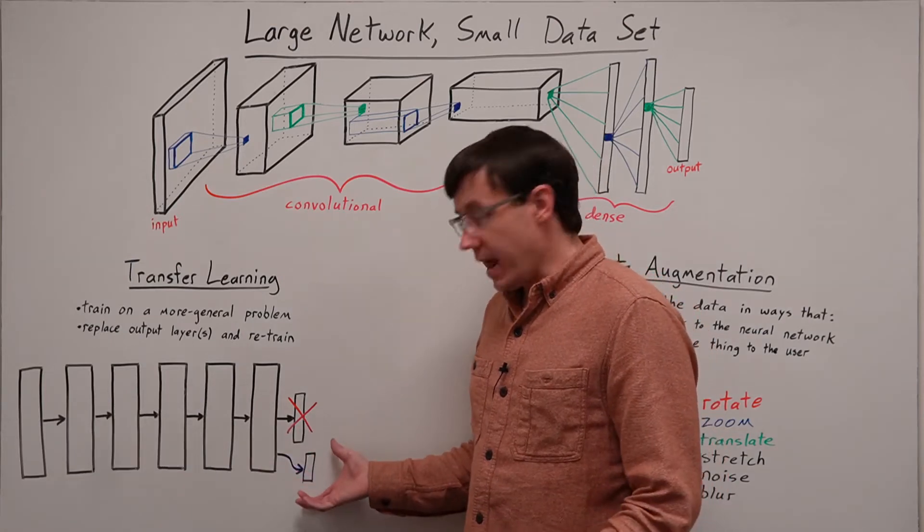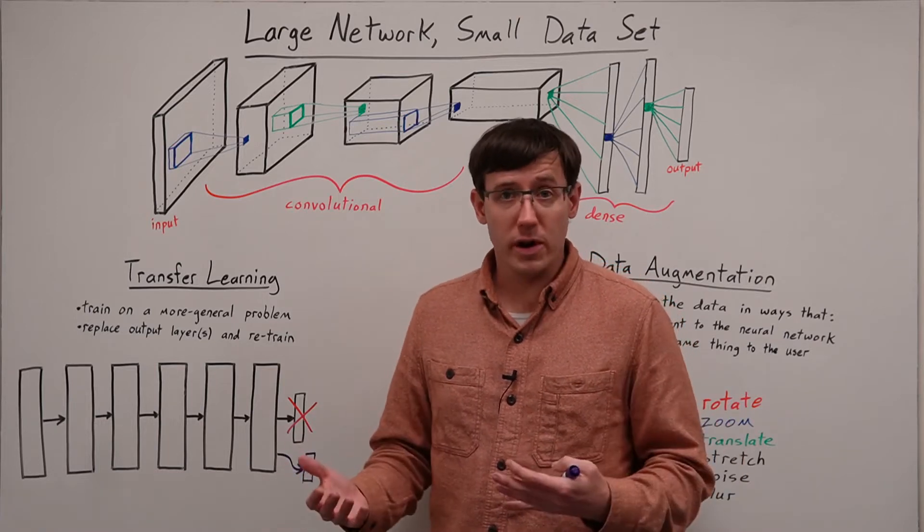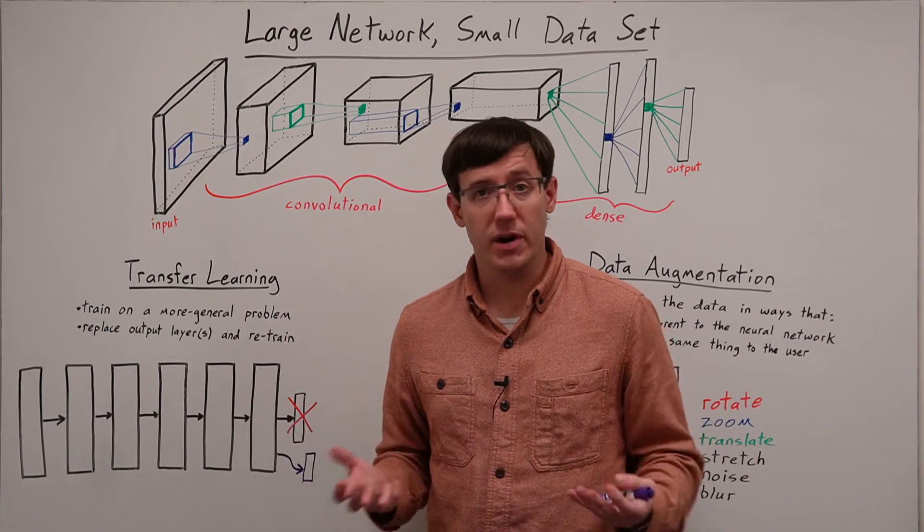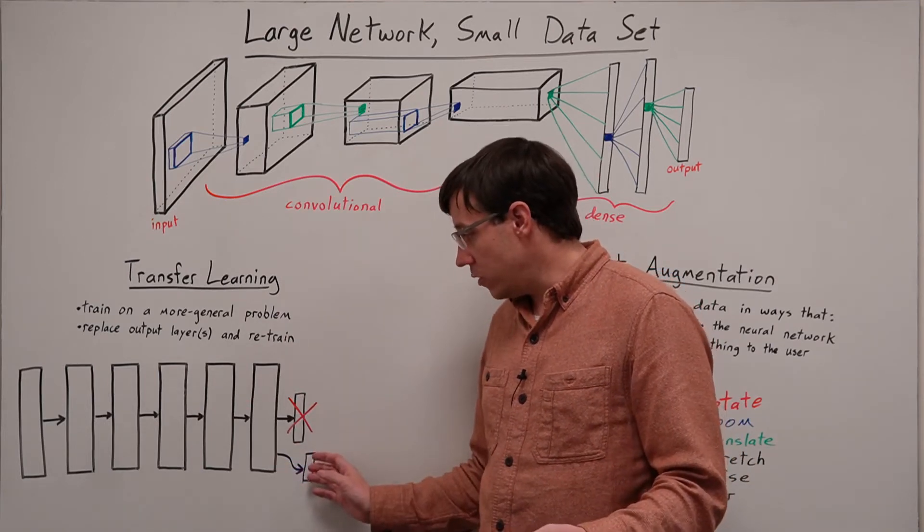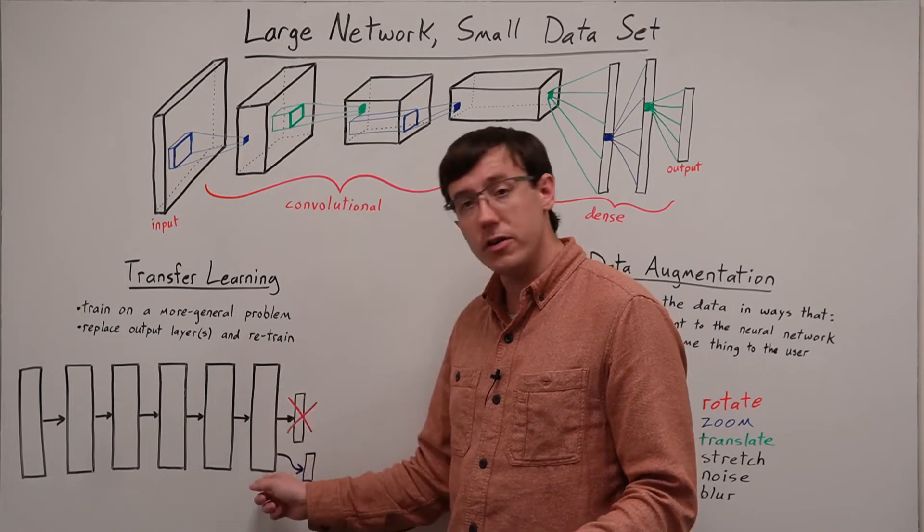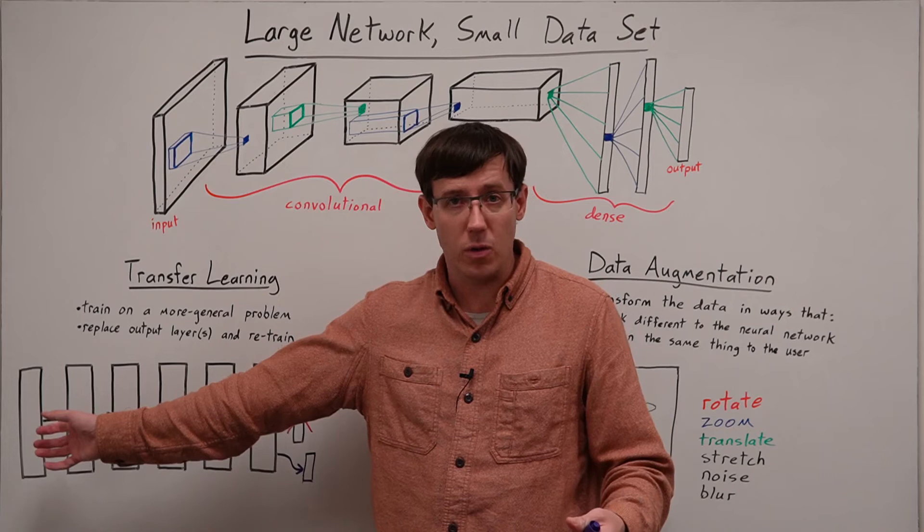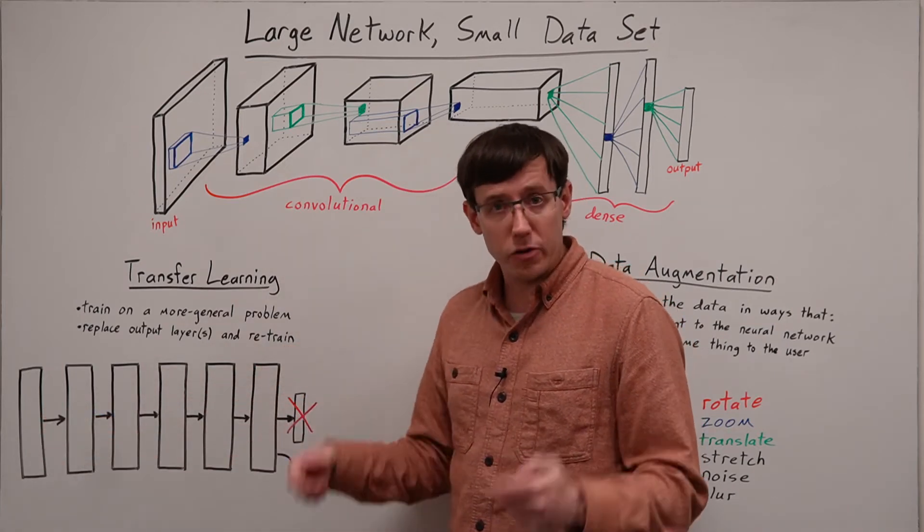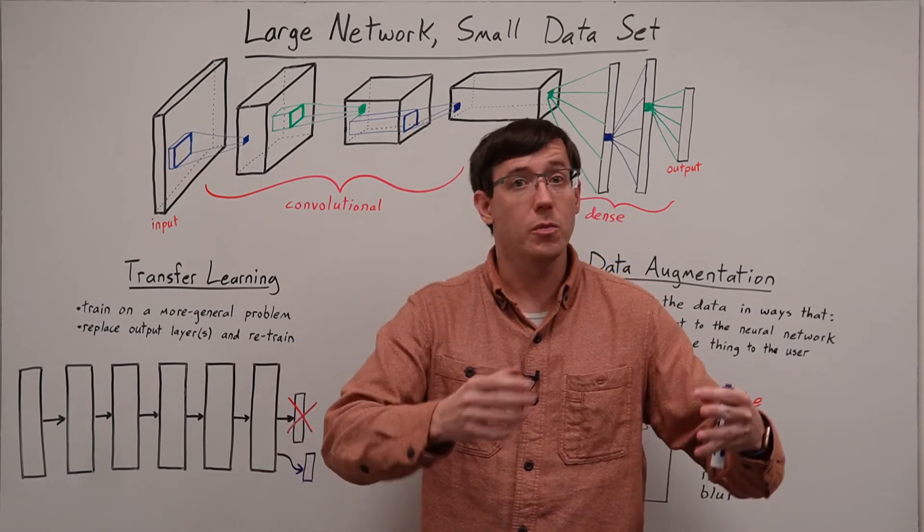So we can choose an output layer shape that matches the problem we're trying to solve, such as the number of labels we want our classifier to output. And adding this new layer will mean adding new weights that connect it back to the last layer of the pre-trained network. And so those weights will require training, and we can train them using our small dataset.